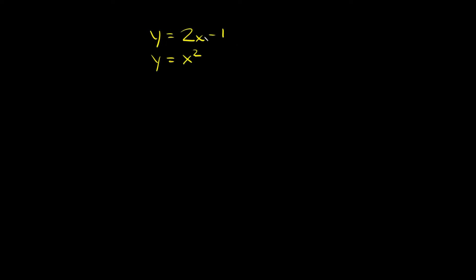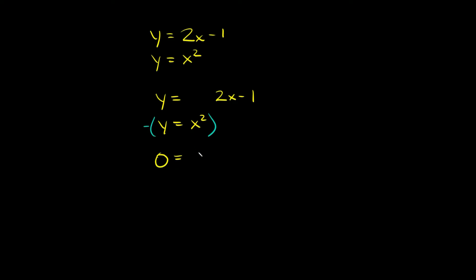The last one we have is y equals 2x minus 1 and y equals x squared. Again, we're going to subtract these, but we have to line them up first. The first equation is y equals 2x minus 1, and the bottom one is y equals x squared. Subtracting: y minus y equals 0, then 0 minus x squared equals negative x squared, plus 2x minus nothing is just plus 2x, and negative 1 minus nothing is just minus 1.